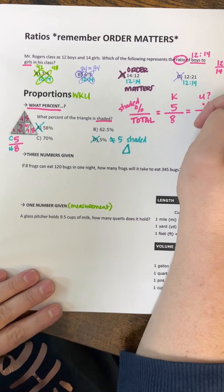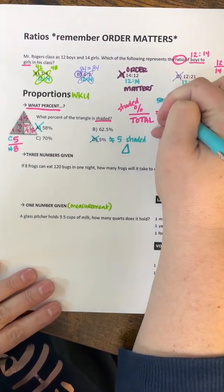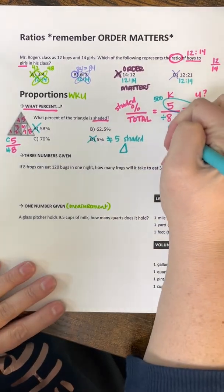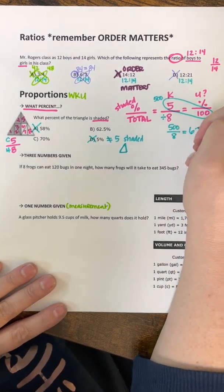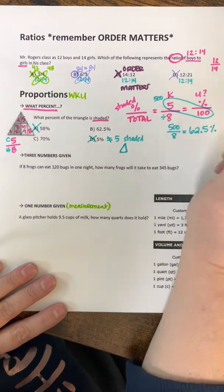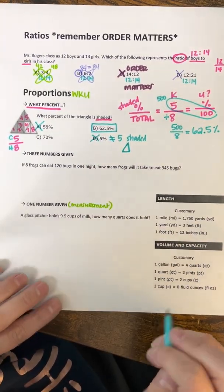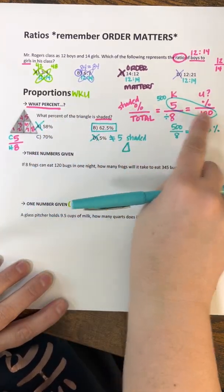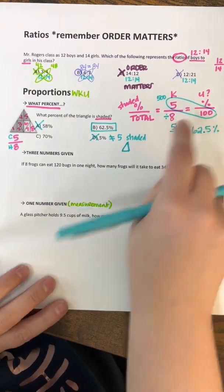So I'm going to solve my proportion. I have five times 100 is 500, and I'm going to divide by eight. So I stack them, 500 divided by 8, and I'm going to end up getting 62.5. And again, my answer is a percent. So the best answer for that one was B. So again, any time your question says what percent, you need your WKU with your U being percent over 100.